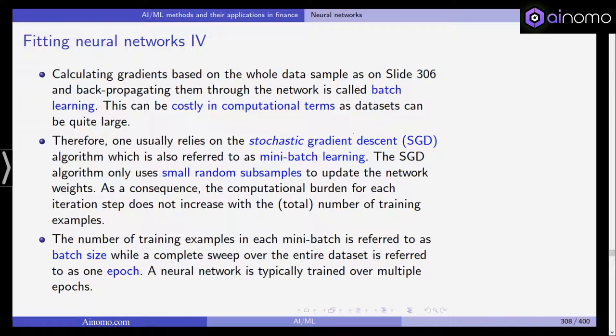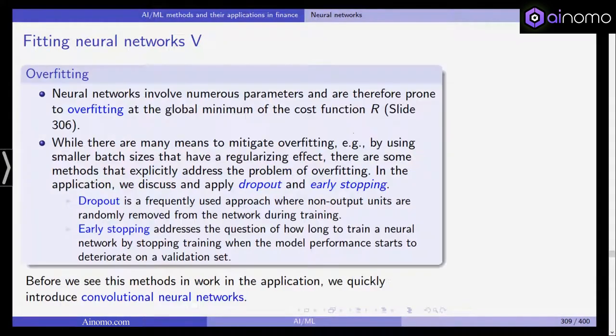The number of training examples in each mini batch is referred to as the batch size, while a complete sweep over the entire data sample of n observations is referred to as one epoch. And a neural network is typically trained over multiple epochs. So you can see with this huge number of parameters and the need to calculate the gradient in each iteration to minimize our cost function, training a neural network with a large data set usually requires a lot of time.